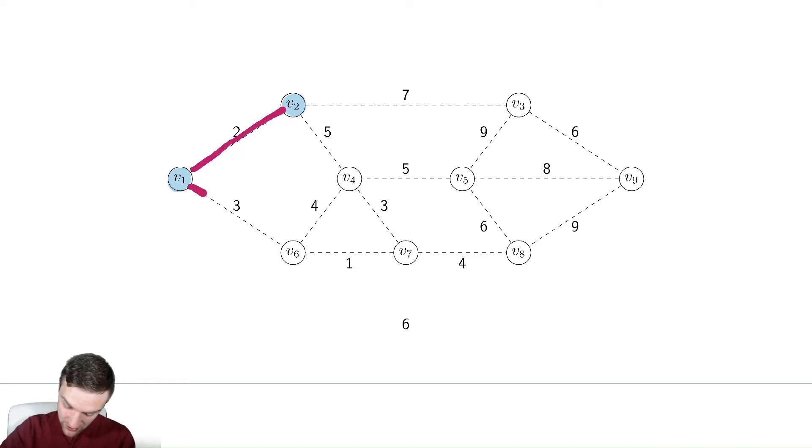So the minimum edge now is this edge with weight three, and that adds v6 to the minimum spanning tree. And now we still have the previous edges, seven, five, and now we have four and one. One is the winner of that battle, so we add one to the minimum spanning tree.